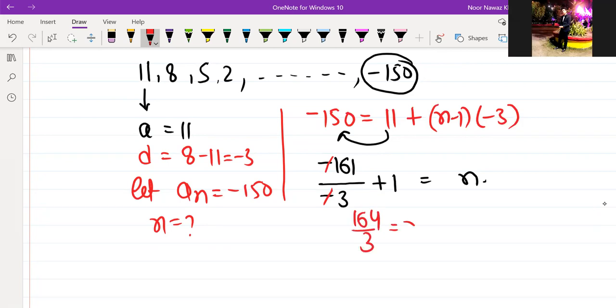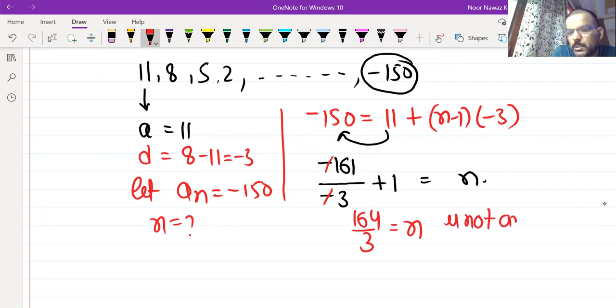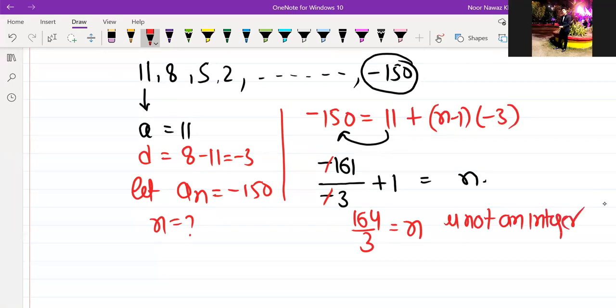164 by 3 is equal to n. It is not an integer. So if it is not an integer, then it is not possible. It is not a term. Do you understand all the kids?